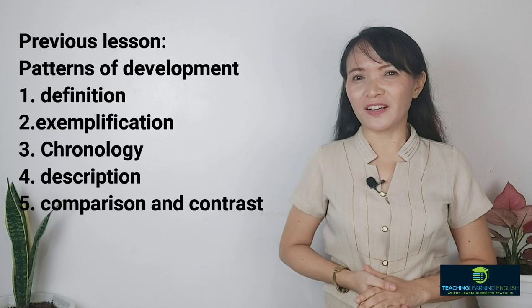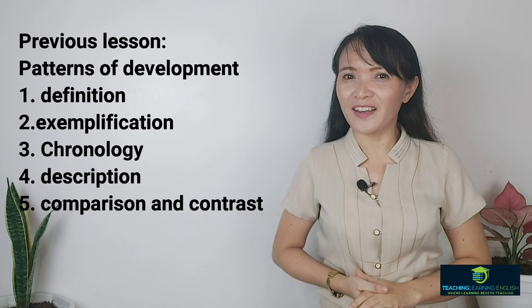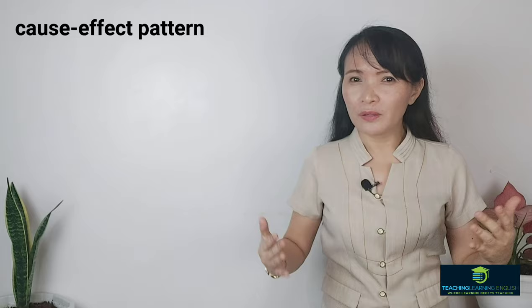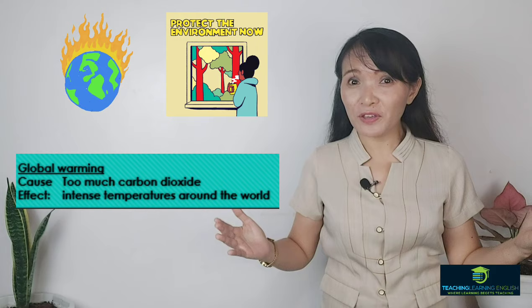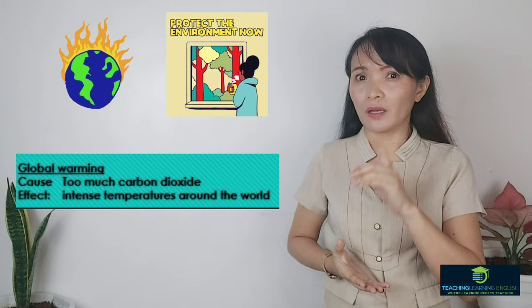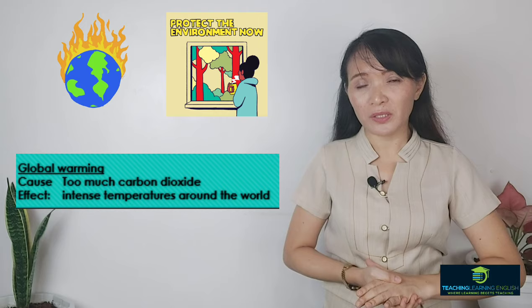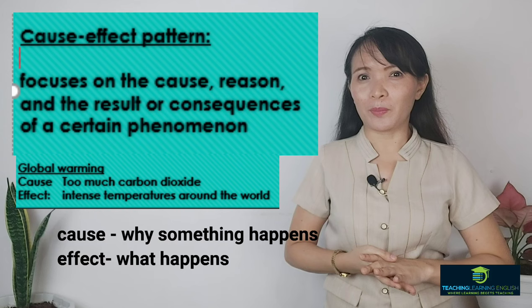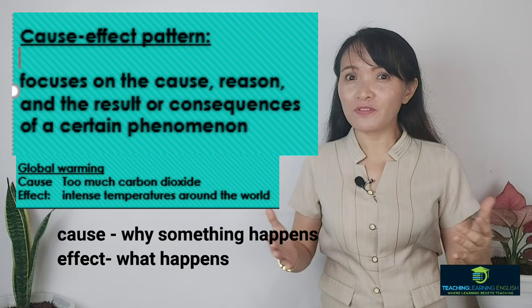Are you ready for our next pattern of writing? Let's proceed to the 6th pattern: cause and effect. The words cause and effect are very common. For example, what's the cause of global warming? We can answer that there is global warming because of too much carbon dioxide — that's one cause. One effect is intense temperatures around the world. A cause is simply why something happens, and an effect is what happens. Together, they can be used as a pattern of development in writing.